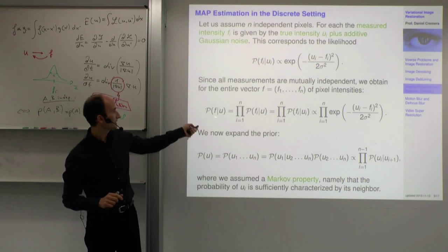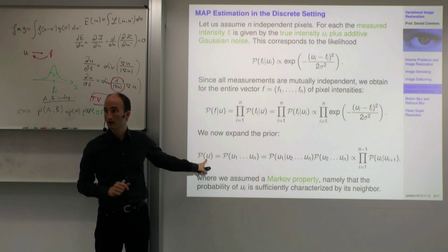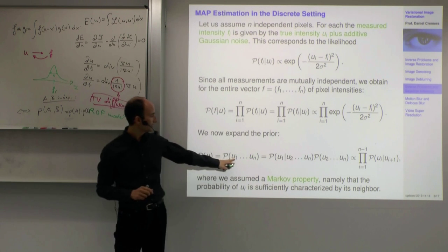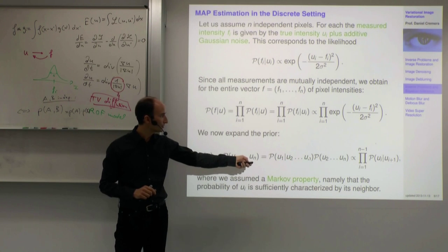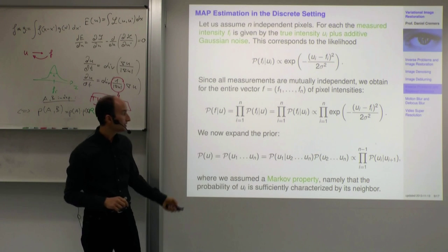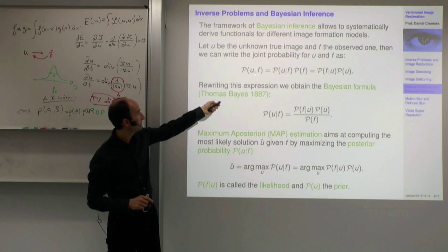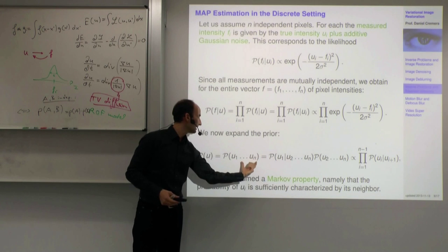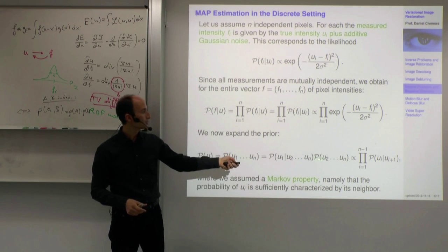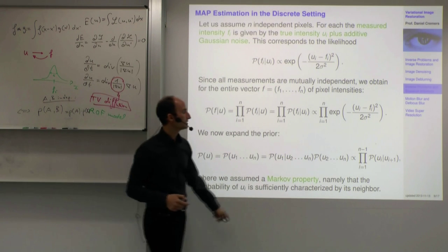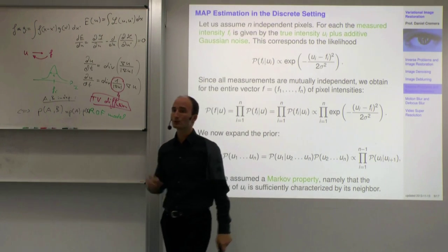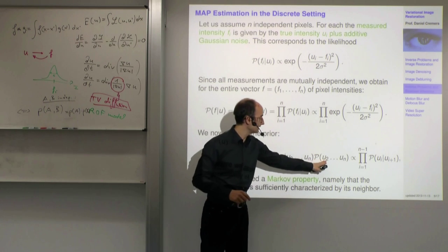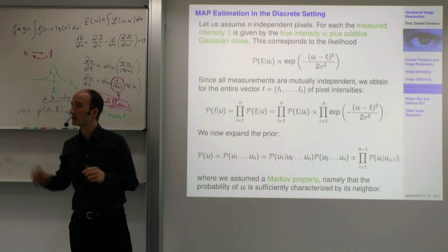Now for the Bayesian approach, we need to write a prior. P(U) = P(U_1 through U_N) can be written as P(U_1|U_2 through U_N) times P(U_2 through U_N), and we apply that rule recursively. So you have a product of many terms: the probability of U_i given the rest, times the probability of the next, and so on, ending with P(U_N).